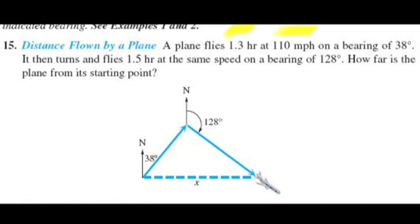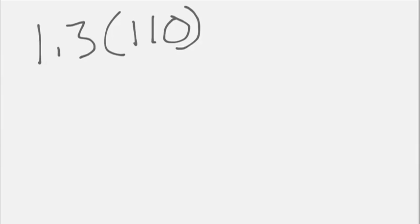But we need a distance for this triangle. How are we going to see how far this plane flew? How about 1.3 times, because this is how many hours he flew. And then how fast was the plane going? 110. So what do we get when we multiply that out? What is it?